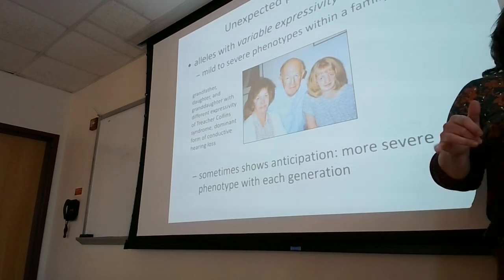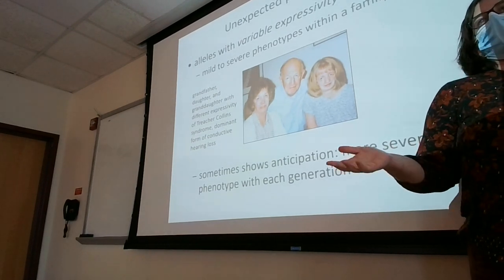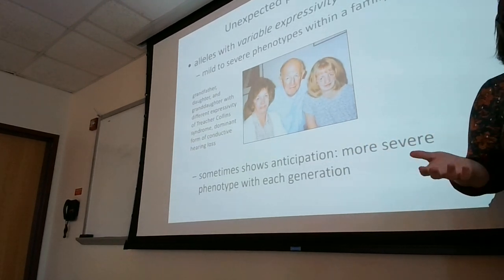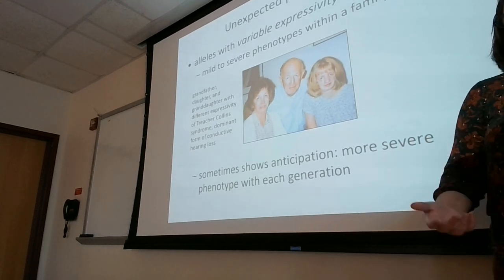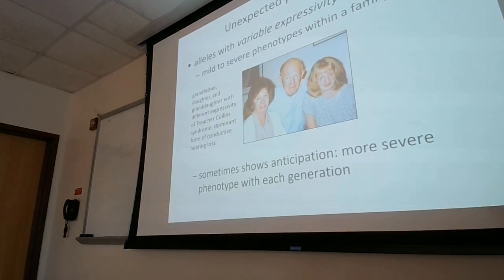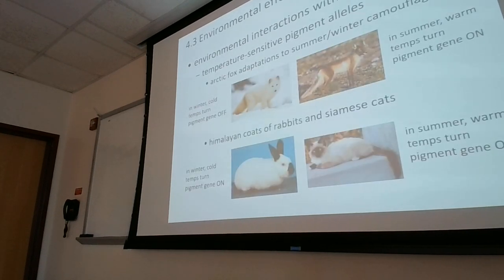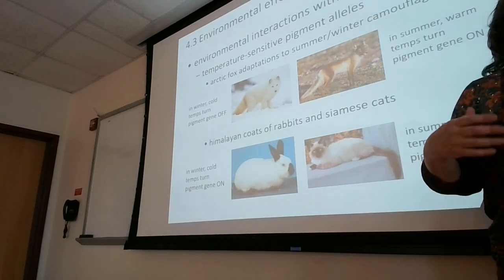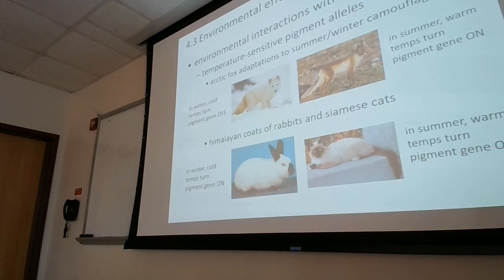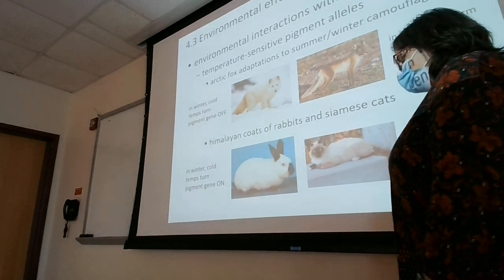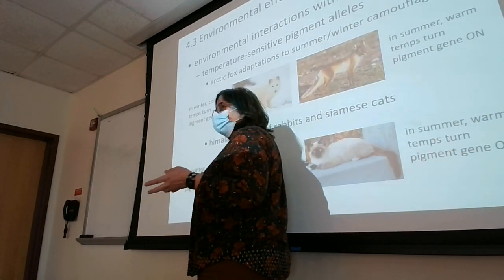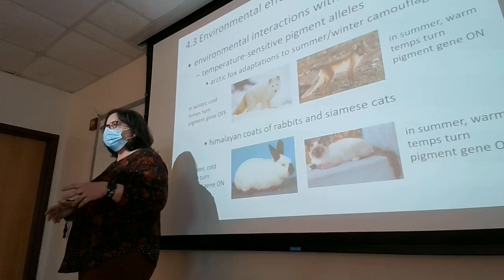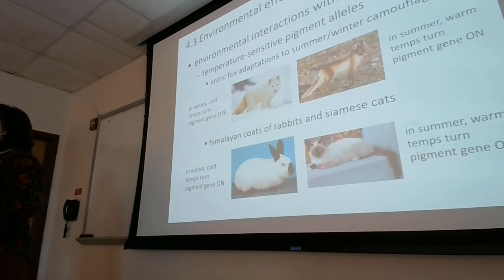Variable expressivity has to do with the range of severity you can have while having the same genotype and the phenotype that's expressed. Now we're going to start talking about what can cause decreased penetrance and variable expressivity. One of the biggest interactions that creates unexpected phenotypes is environmental effects.